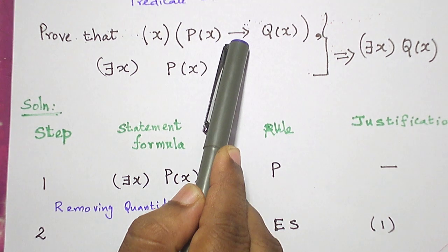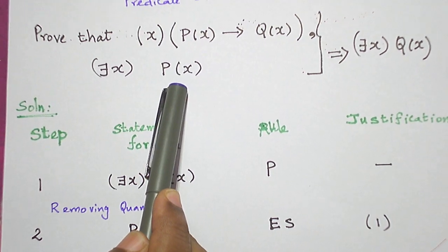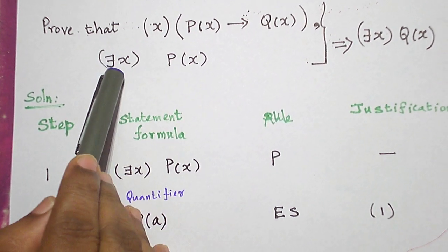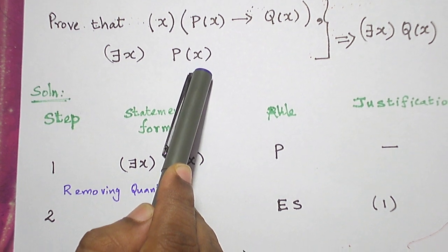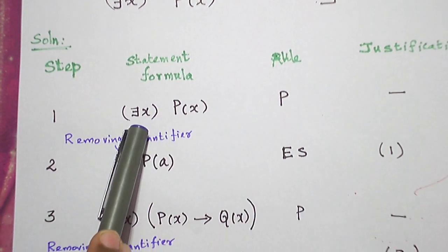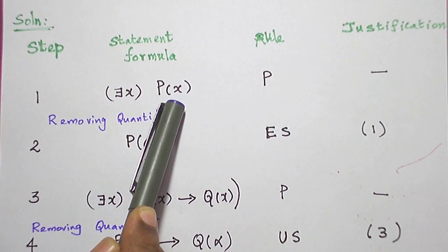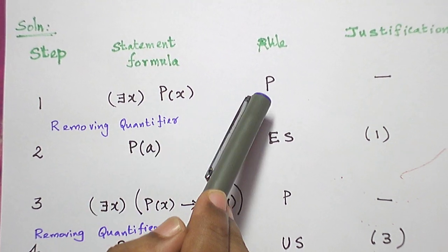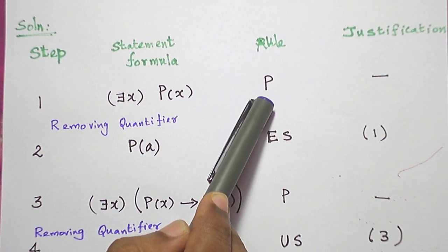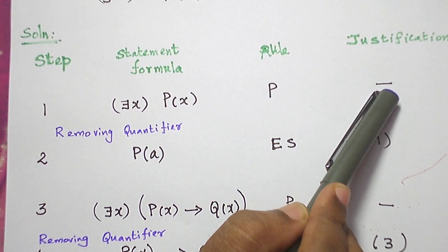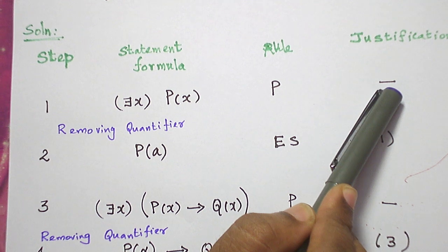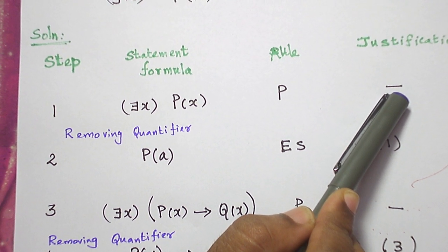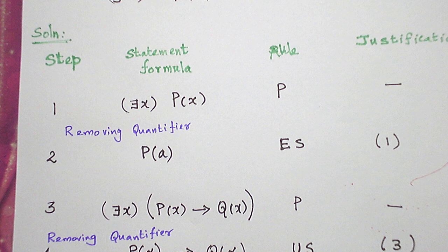First, let me introduce the simplest premise without any connective. Here we have a conditional connective in one premise, but this one has no connective, so let me introduce the premise: there exists x such that P(x). This premise is introduced using Rule P, so we don't need any justification here.